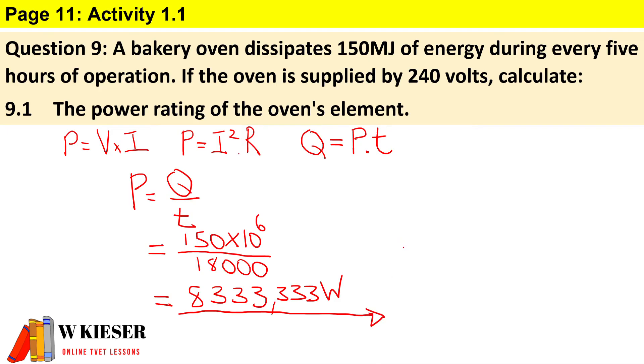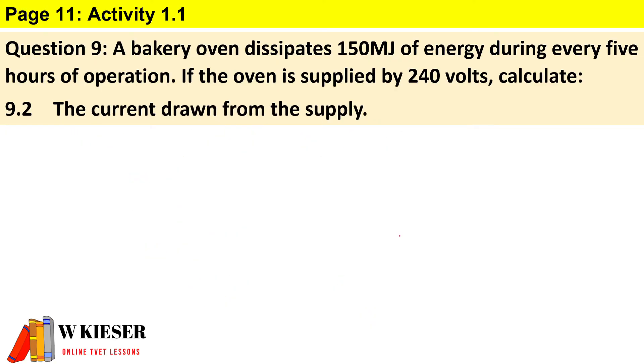Question 9.2: We need to calculate the current drawn from the supply. Just a reminder of the formula: power equals voltage times current. Therefore, to calculate the current, it will be power over voltage: 8,333.333 divided by 240.